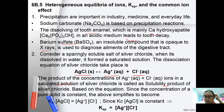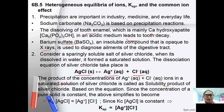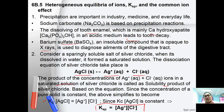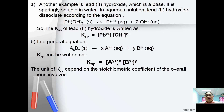Based on the equation, Kc can be expressed as [Ag⁺][Cl⁻] / [AgCl]. Rearranging gives Kc × [AgCl] = [Ag⁺][Cl⁻]. Since Kc × [AgCl] is constant, it can be expressed as a new equilibrium constant called KSP. So KSP = [Ag⁺][Cl⁻]. Another example is lead(II) hydroxide, which is sparingly soluble in water.